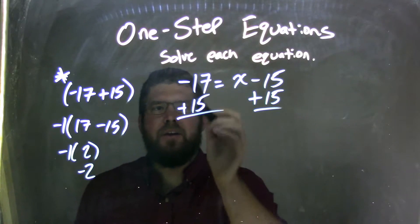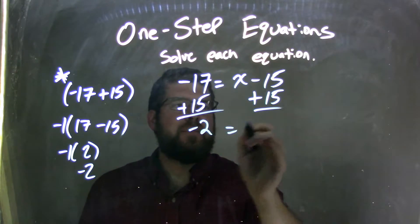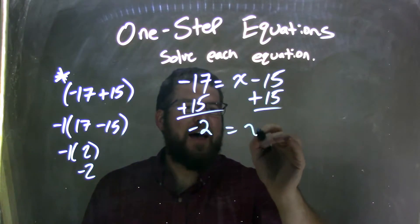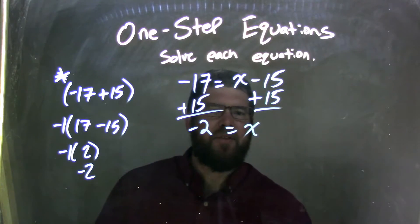And so that would be my answer here, negative 17 plus 15, it is really just negative 2. These cancel, we're left with just x. We don't really need those. Negative 15 plus 15, they cancel out, it's just plus 0.